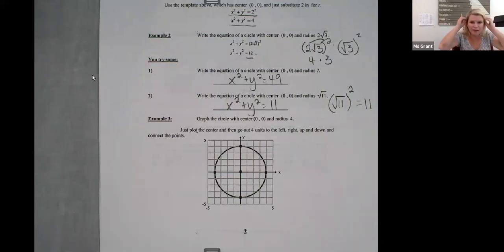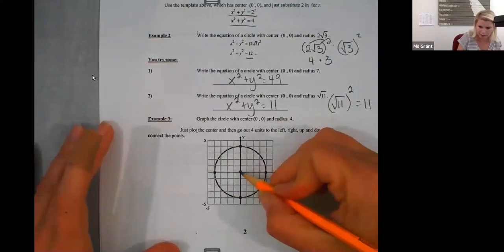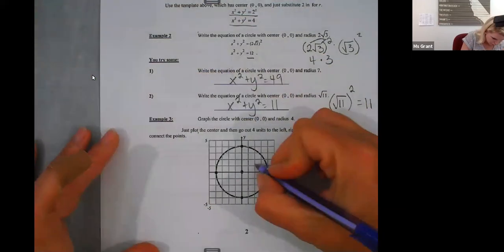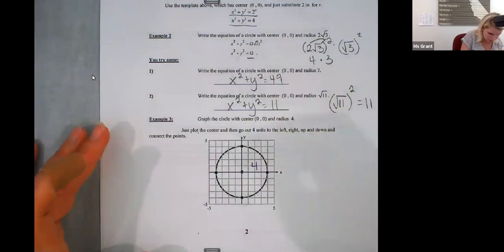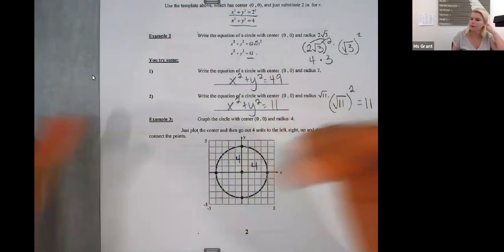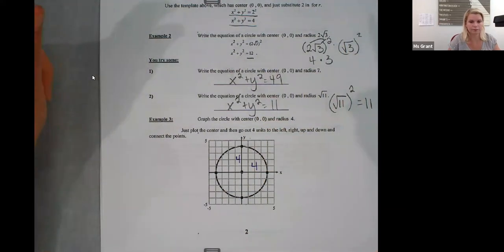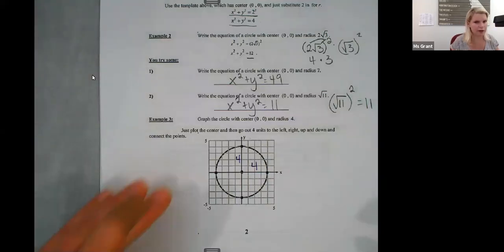So graphing, I'm given the center of zero, zero, make a point. Then it says that the radius is four. So I'm going to go to four in all directions. I don't need to write it, but you see. Okay. Okay. All right. I'm moving on.